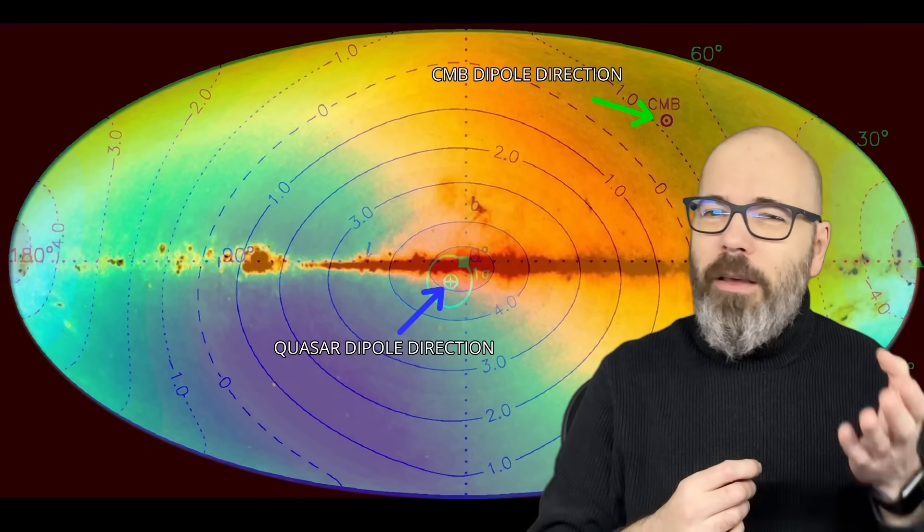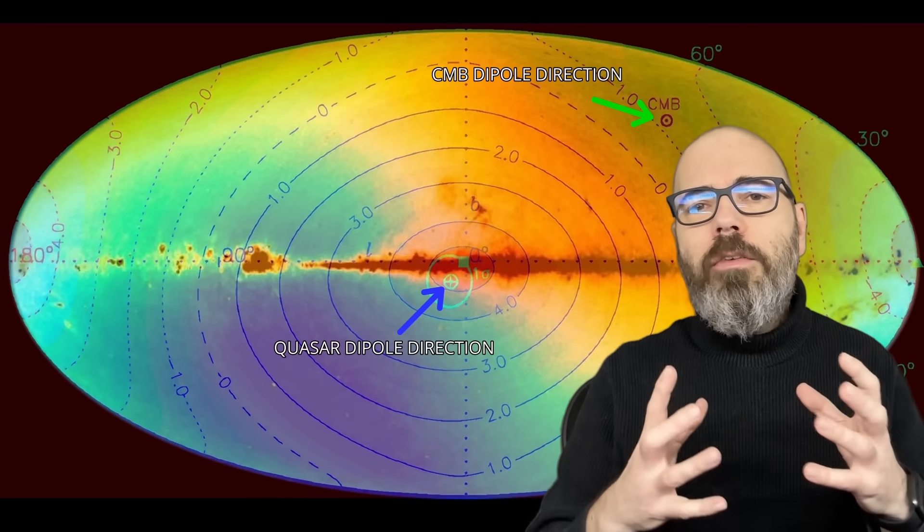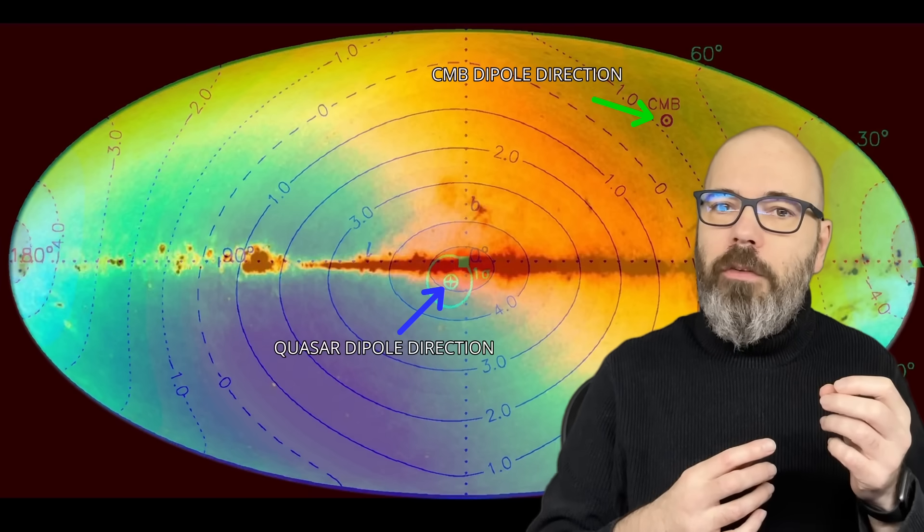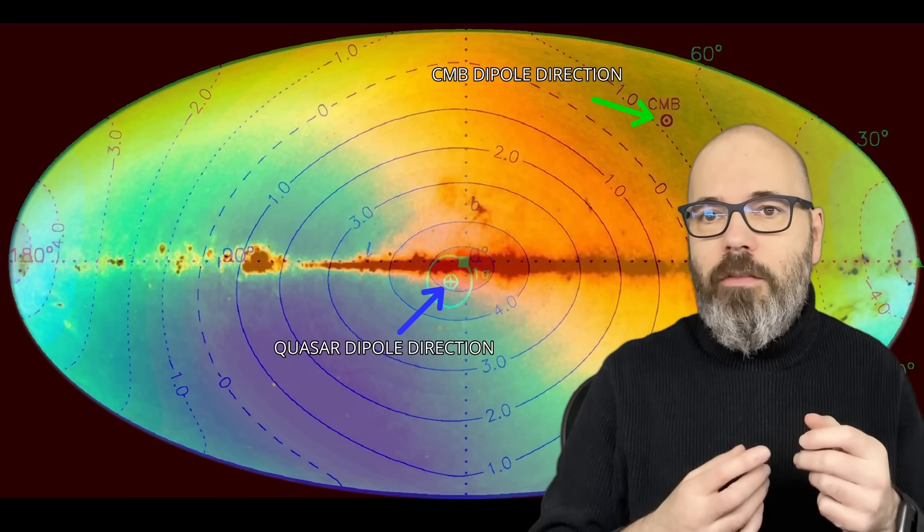Like the CMB, quasars show a dipole, a kind of universal offset in redshift that can be read as our motion through the universe. But the direction doesn't match.